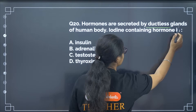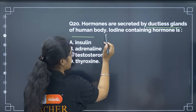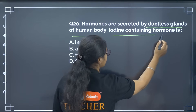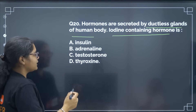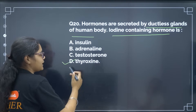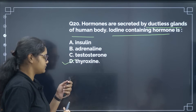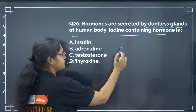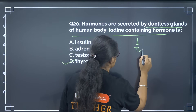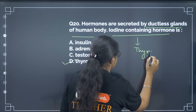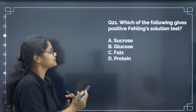Hormones are secreted by ductless glands. The iodine-containing hormone is thyroxine — correct answer is option number D. Deficiency of iodine causes thyroid disease, which you should also remember.